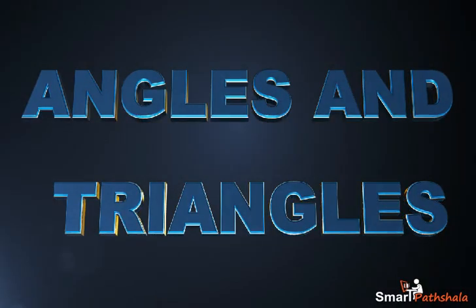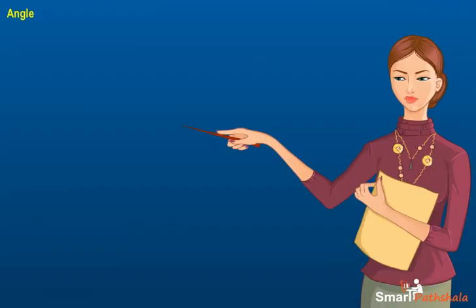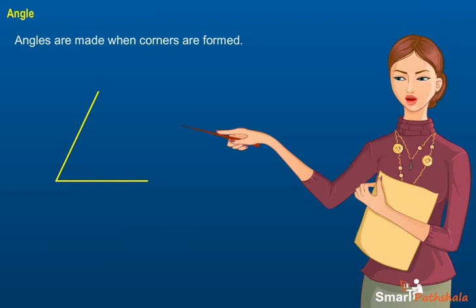Angles and Triangles. This module will explain about angles and triangles. Angles are made when corners are formed.